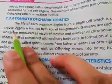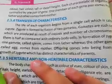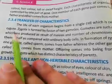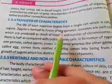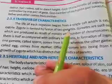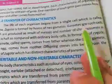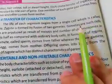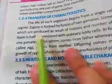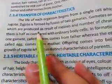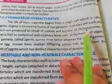The life of each organism begins from a single cell which is called zygote. Zygote is formed by fusion of two gametes. Gametes are such cells which are produced as a result of meiosis, and the number of chromosomes in them is half compared with ordinary body cells.